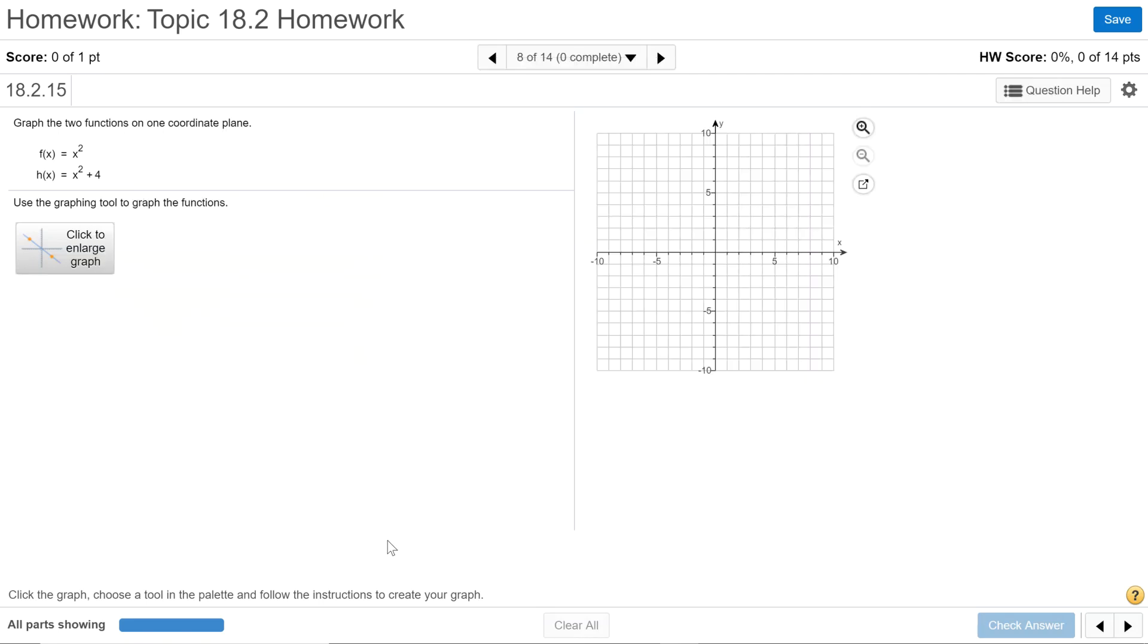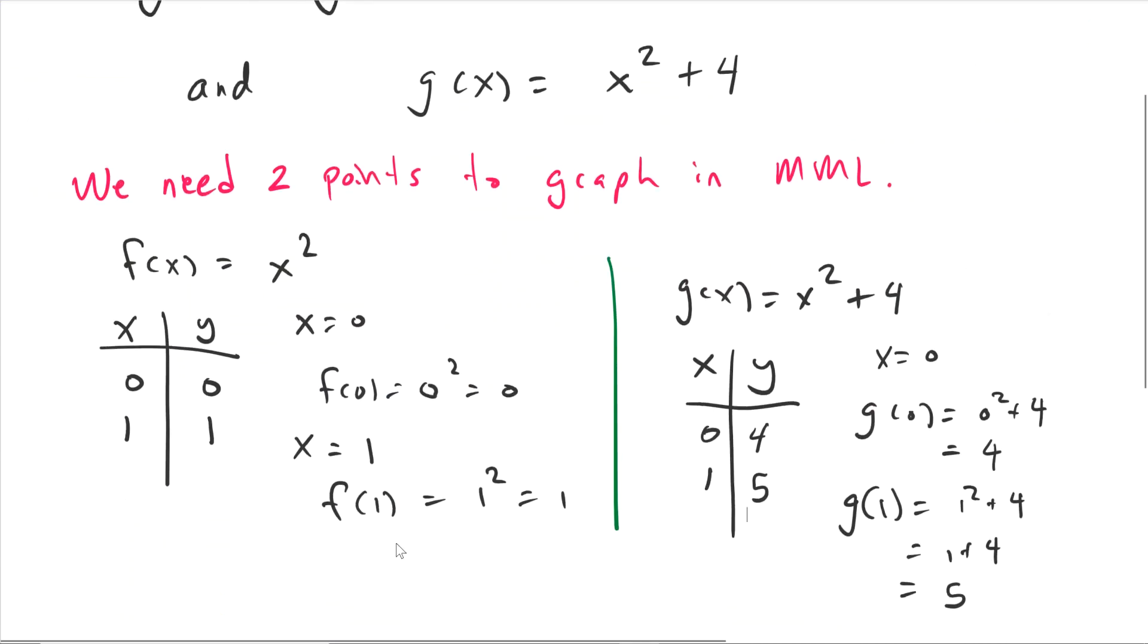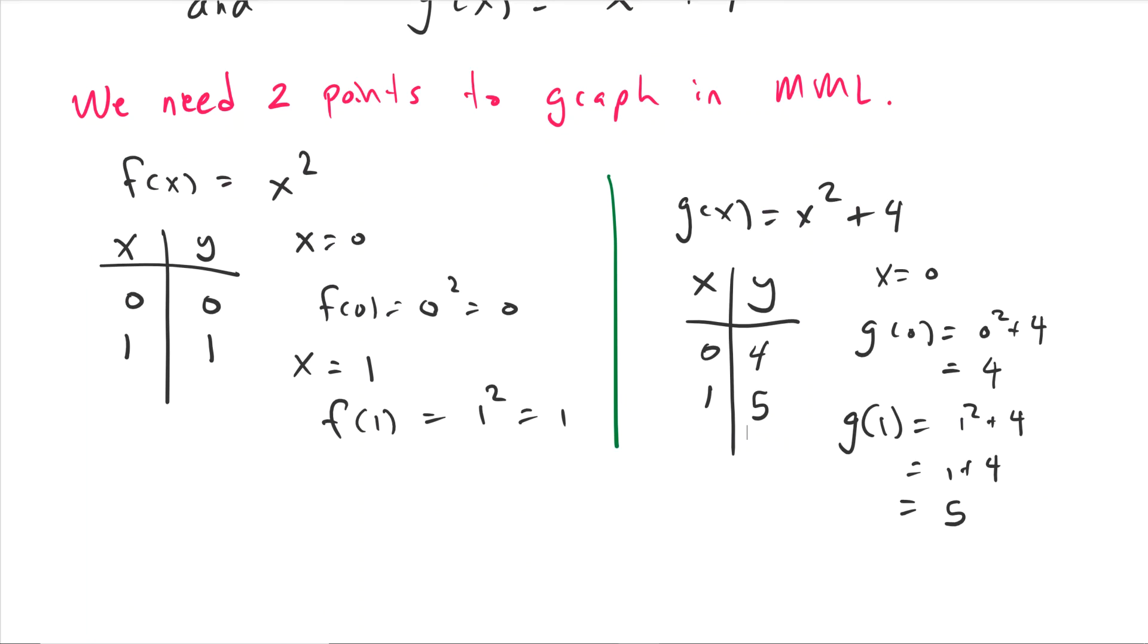First, we need two points because every time you graph something in MyMathLab, you need two points. We have highlighted our functions here: f(x) = x squared and g(x) = x squared plus four.